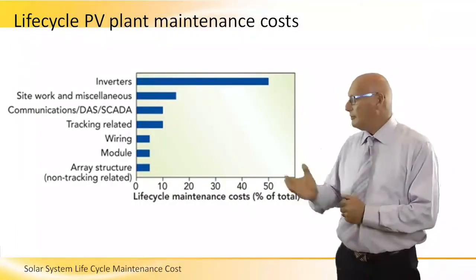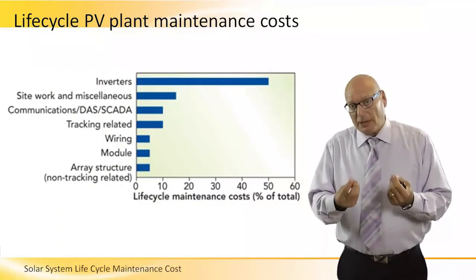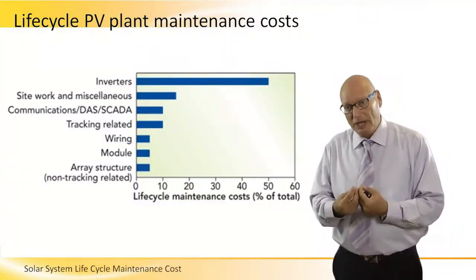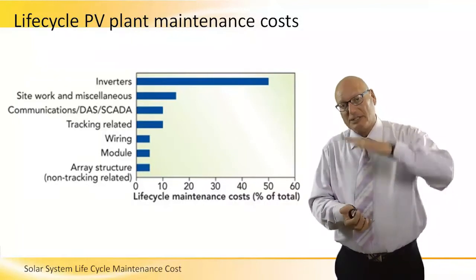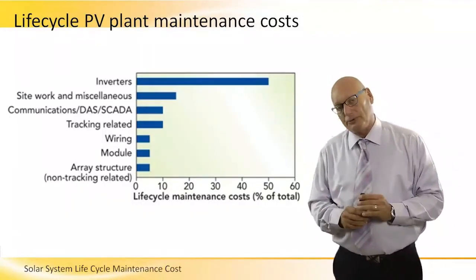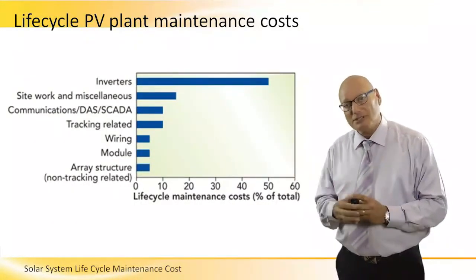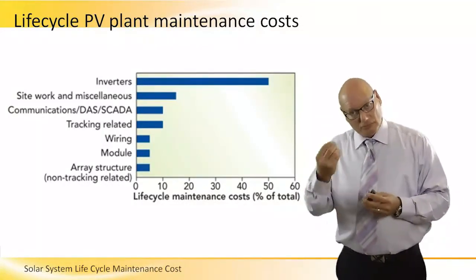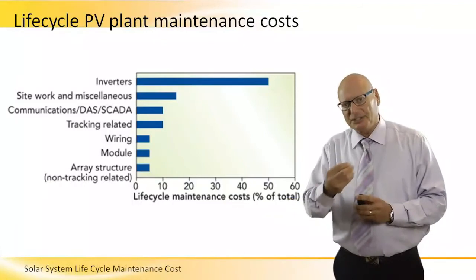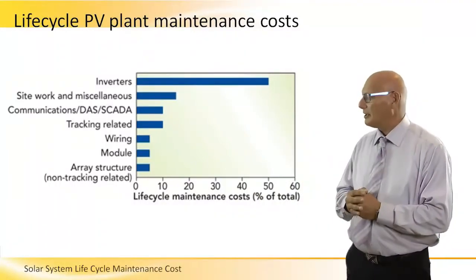The panels themselves — the modules — contribute about 5% of maintenance costs. Modules are a very reliable component. Although exposed for about 25 to 30 years outdoors, they are manufactured with a vacuum between layers, a protective glass on top, and a well-sealed aluminum frame around the perimeter. So a PV panel is basically a reliable device. But it still has its own problems — we will need to replace them sometimes. There are shorts, arcs, and reductions in the purity of the silicon. There is a long list of problems contributing about 5% of the maintenance cost.